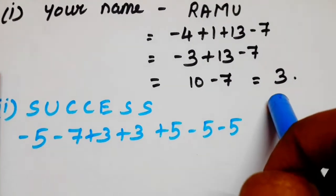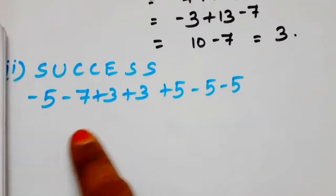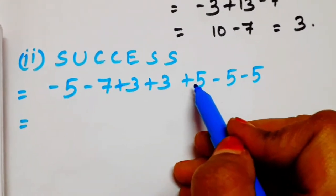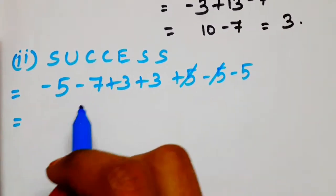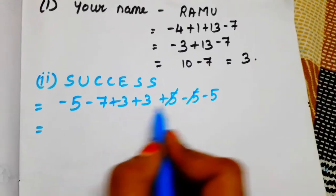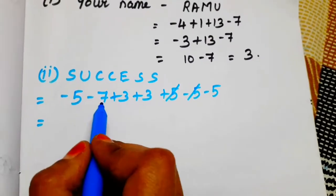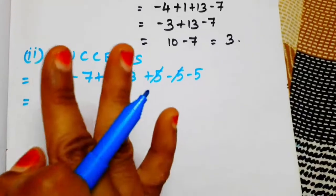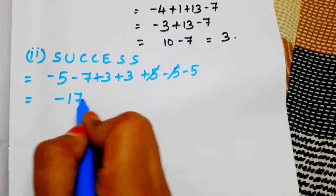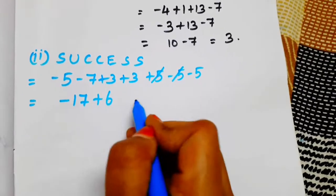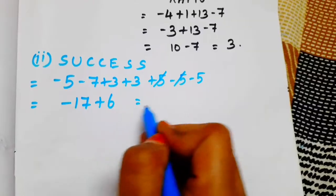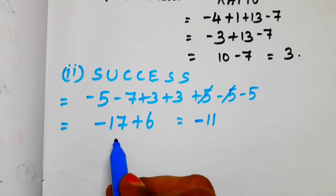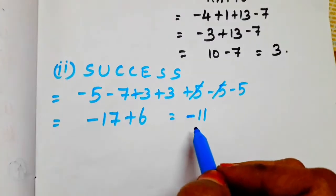Working through the calculation: add 3, then substitute values. Add plus 5, minus 5, next minus. First add 5 plus 7: 7, 8, 9, 10, 11, 12. Next, 12 plus 5: 12, 13, 14, 15, 16, 17. So minus 17. Next plus 3, plus 3, so plus 6. 17 plus 6 gives 11. Since 17 is the greater number, take the minus sign. So the answer is minus 11.